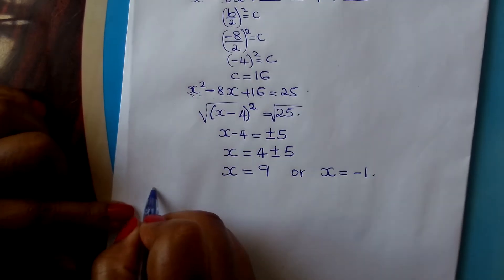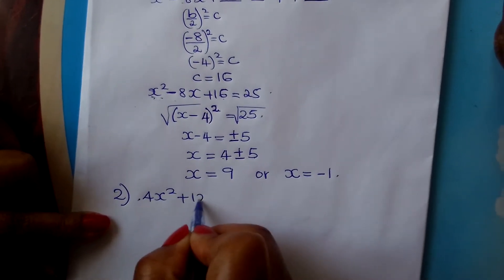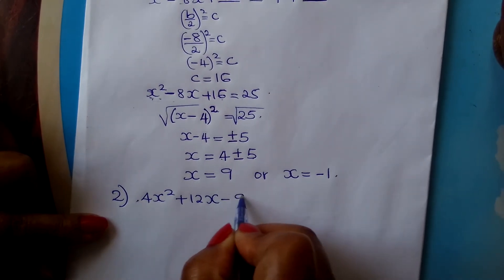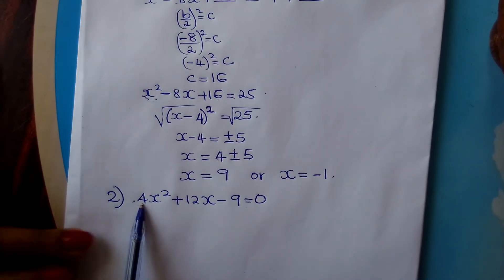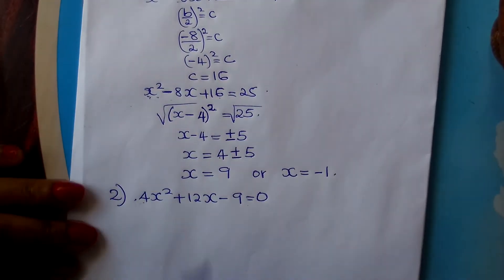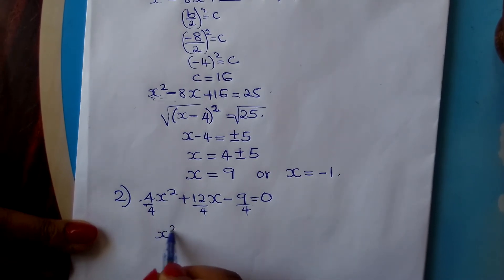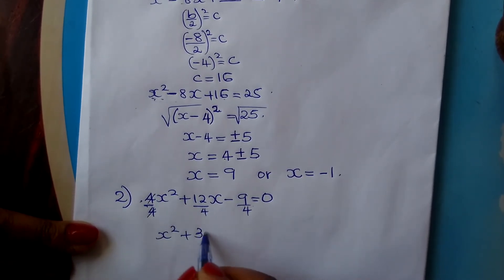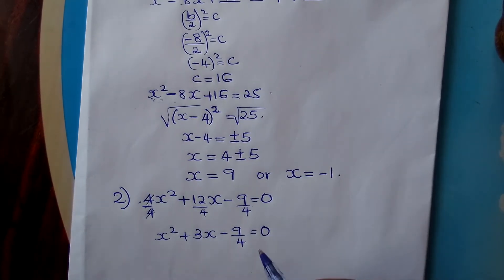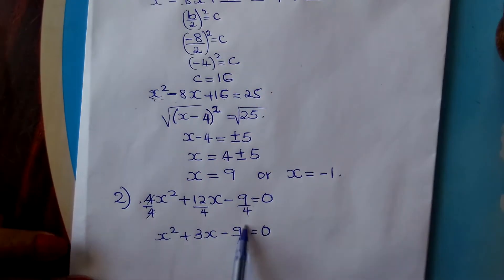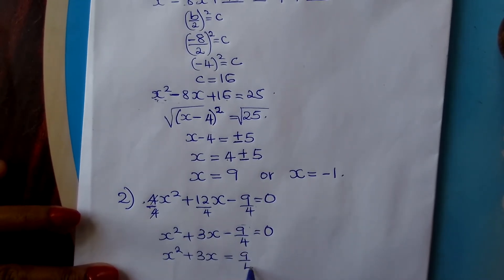We'll go to the second example. Suppose we have 4x squared plus 12x minus 9 equals 0. If you look at this problem, the coefficient of x squared is 4, so you make it 1 by dividing by 4 throughout. This gives us x squared plus 3x minus 9 over 4 equals 0. Then the next step, just like we have done above, is that you take this constant to the other side, so you'll be left with x squared plus 3x equals 9 over 4.